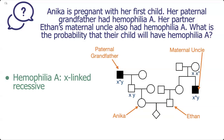We know that Ethan's maternal grandmother was a carrier because she had a son who showed the trait. We don't know if Ethan's mom is a carrier or not, but we know Ethan's genotype because he doesn't show the trait, so we know that he is X-Y.